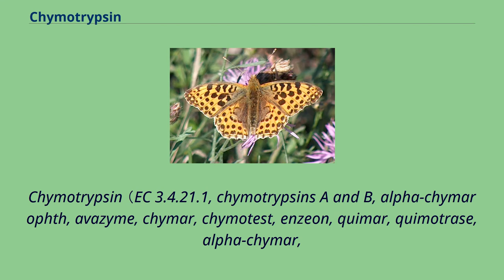Chymotrypsin, EC 3.4.21.1, also known as chymotrypsins A and B, alpha-chymotrypsin, avazyme, chymar, chymotist, enzyin, chemotrase, and alpha chymar.